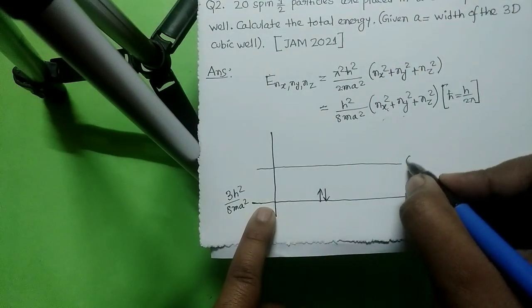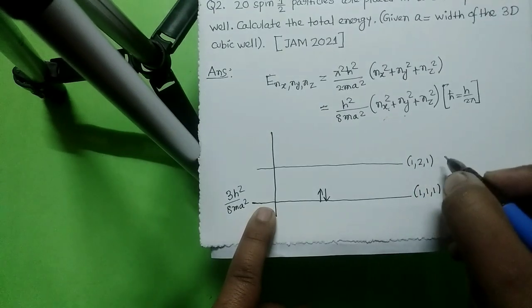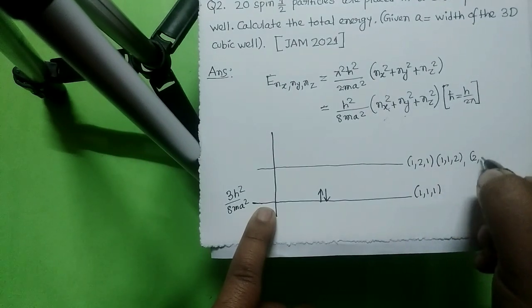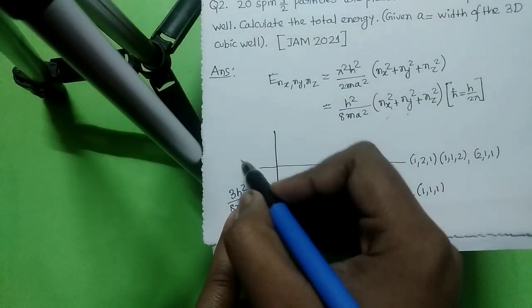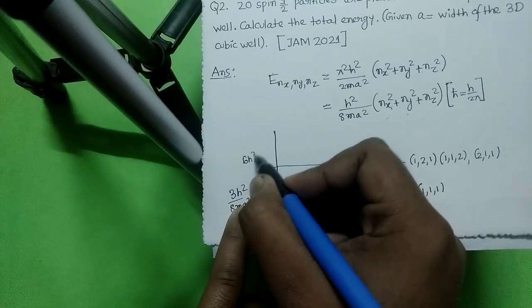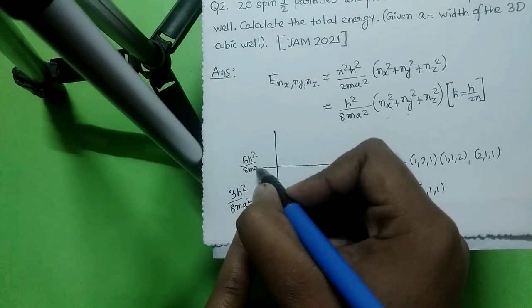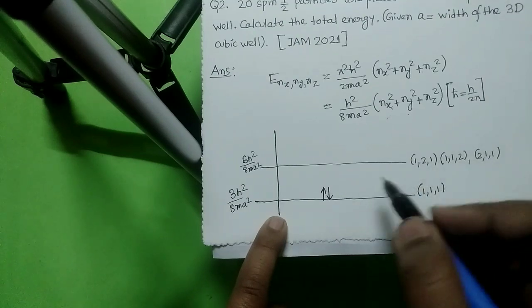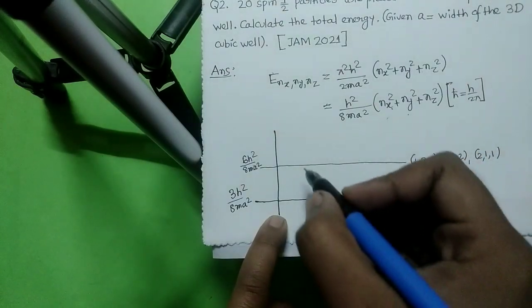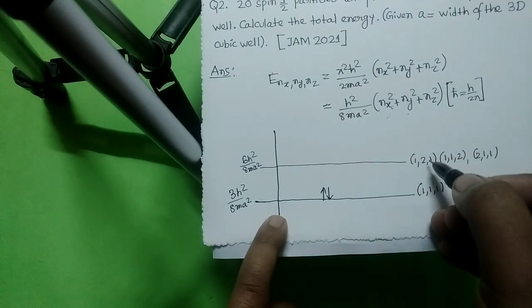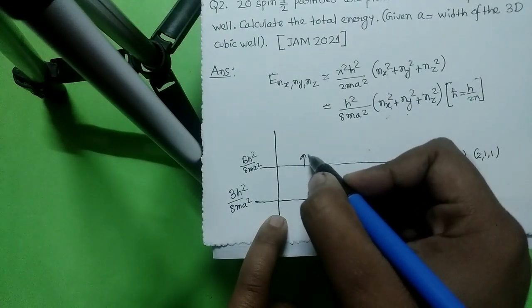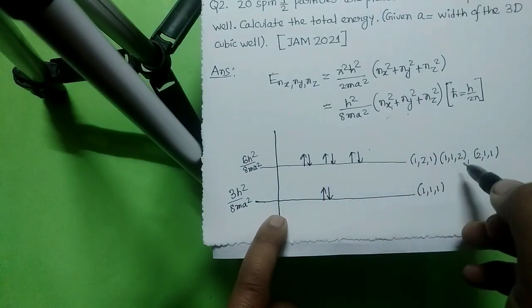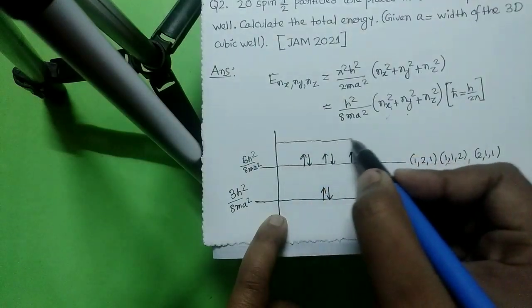For the second state, the quantum numbers are (1,2,1), (1,1,2), and (2,1,1), giving energy 6h²/8ma². This is a degenerate state with degeneracy 3. Since each energy state holds 2 spin-half particles, this energy level contains 6 particles in total.